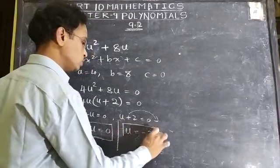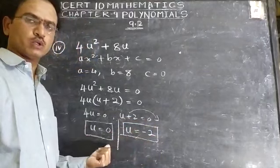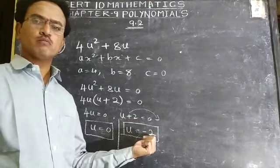Now we got two zeros. Two values. α = 0, β = -2.